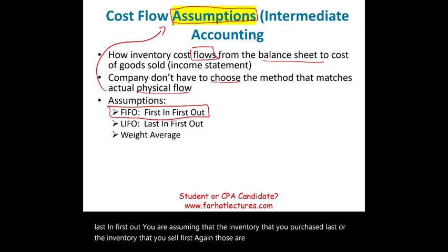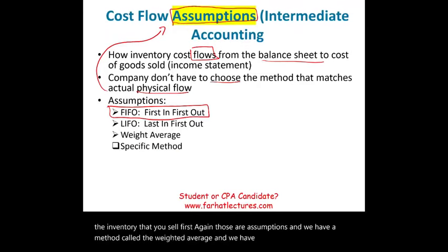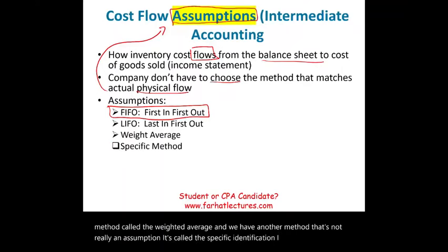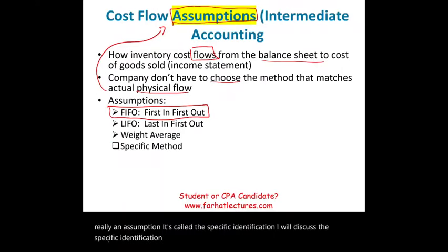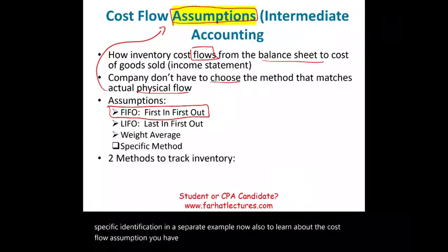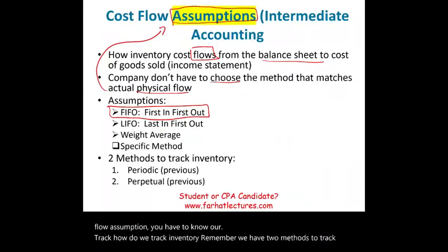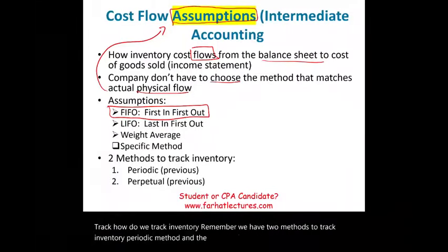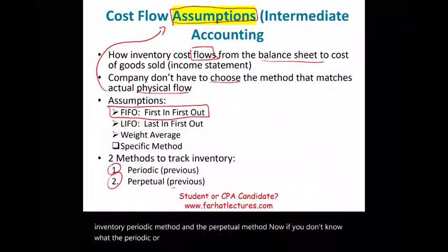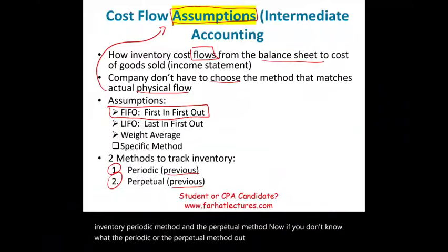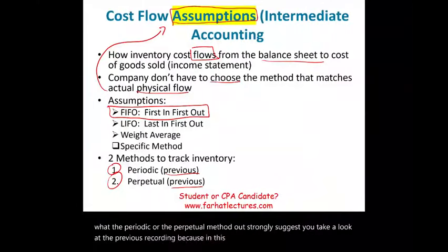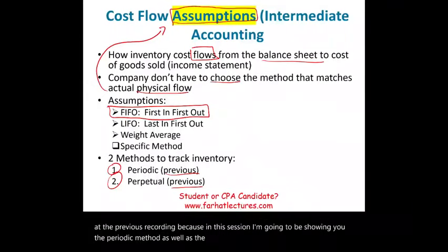We also have the weighted average method and specific identification, which is not really an assumption — I'll discuss specific identification in a separate example. To learn about cost flow assumptions, you also need to know how to track inventory. We have two methods: the periodic method and the perpetual method. In this session, I'll be showing both side by side.